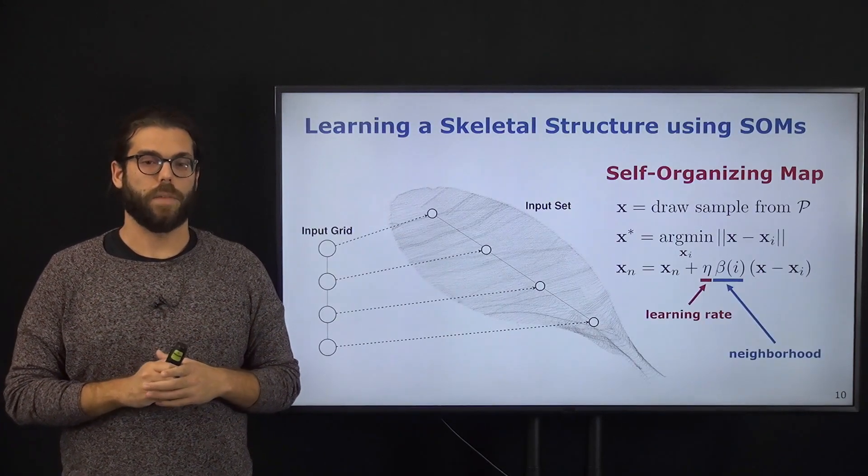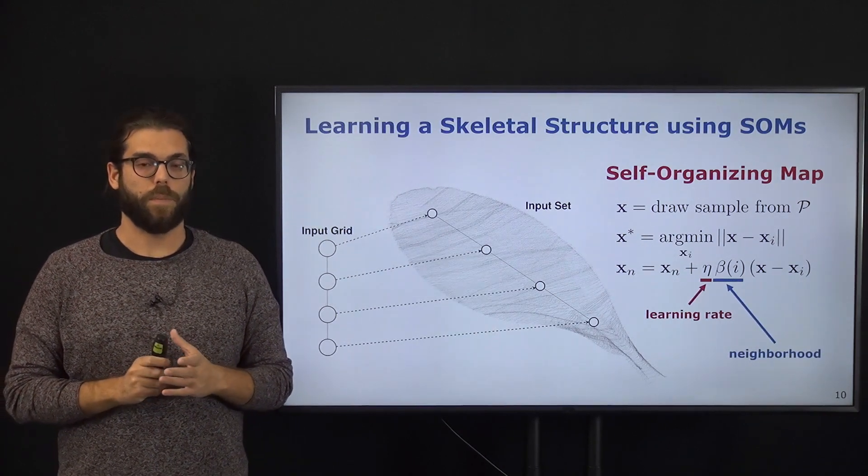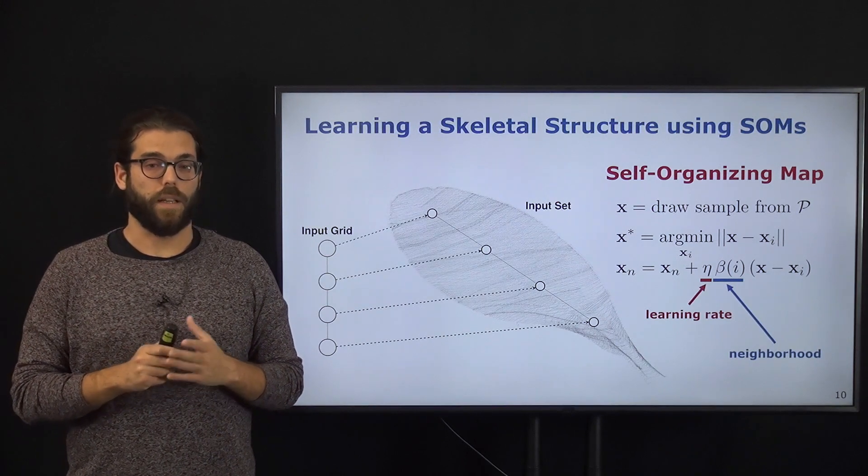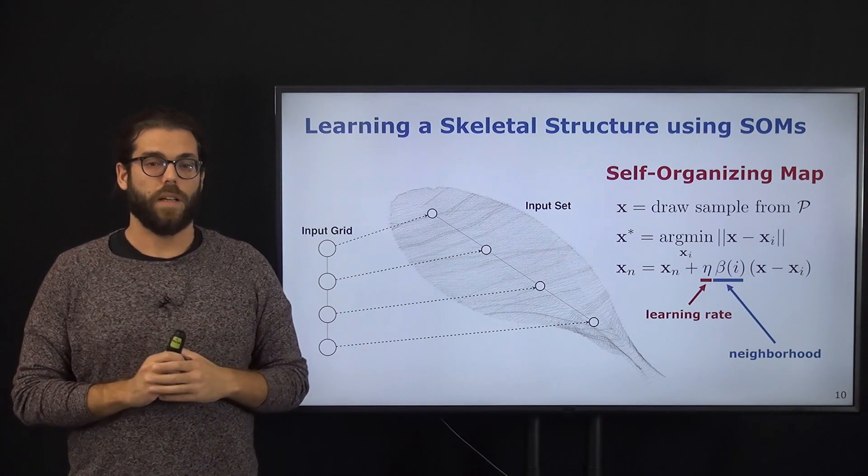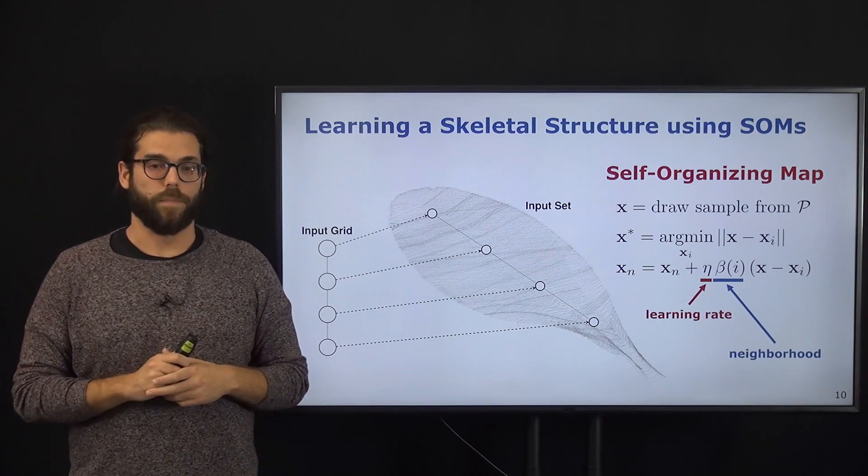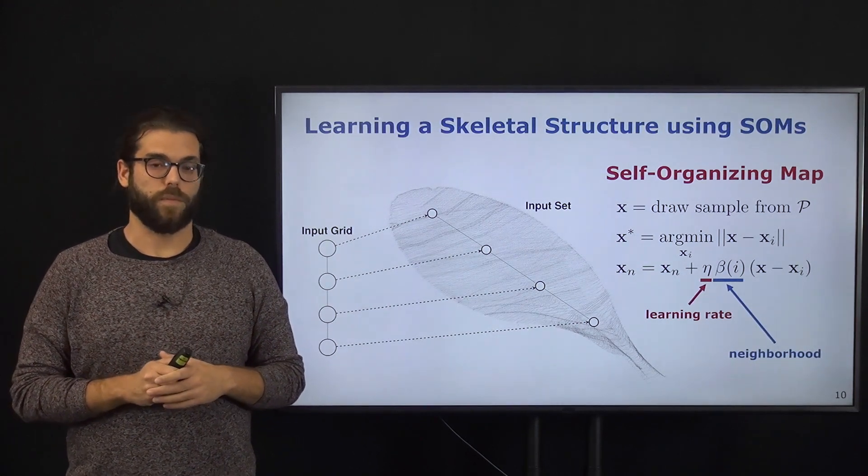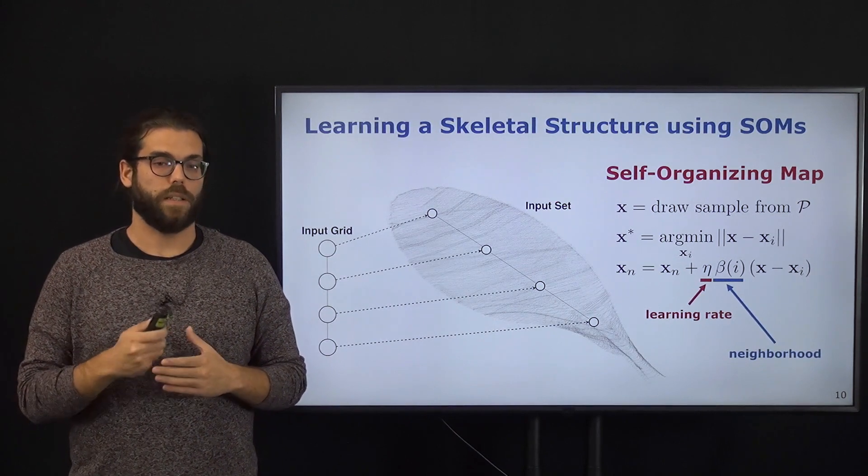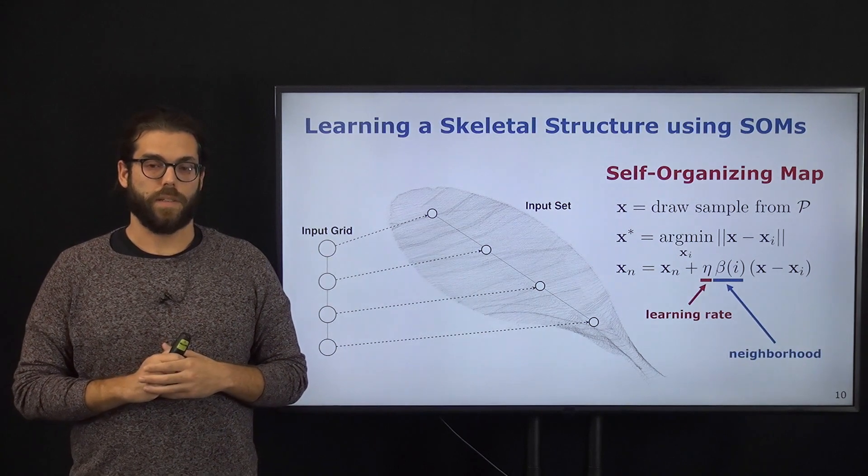So how does the self-organizing map work? The first thing we have to do is define an input map. In this case, it's just a grid, and to each node in this grid there is an associated 3D coordinate because our input data is three-dimensional. Once we have defined our input grid, we are able to start an iterative procedure that after convergence will give us our skeleton.